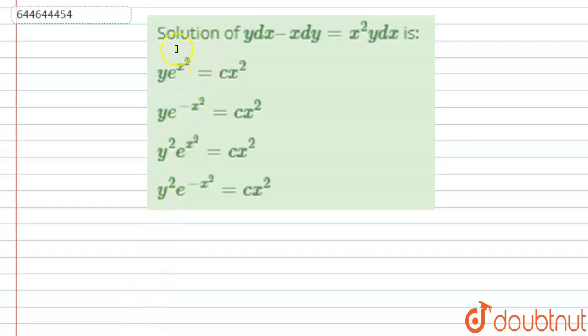Hello everyone, let us start this question. This question says we need to find the solution of y dx minus x dy equals x square y dx. We have four options. First option is y times e power x square that is equal to c x square. Second option is y times e power minus x square that is equal to c x square. Third option is y square times e power x square equals c x square. Fourth option is y square times e power minus x square that is equal to c x square.